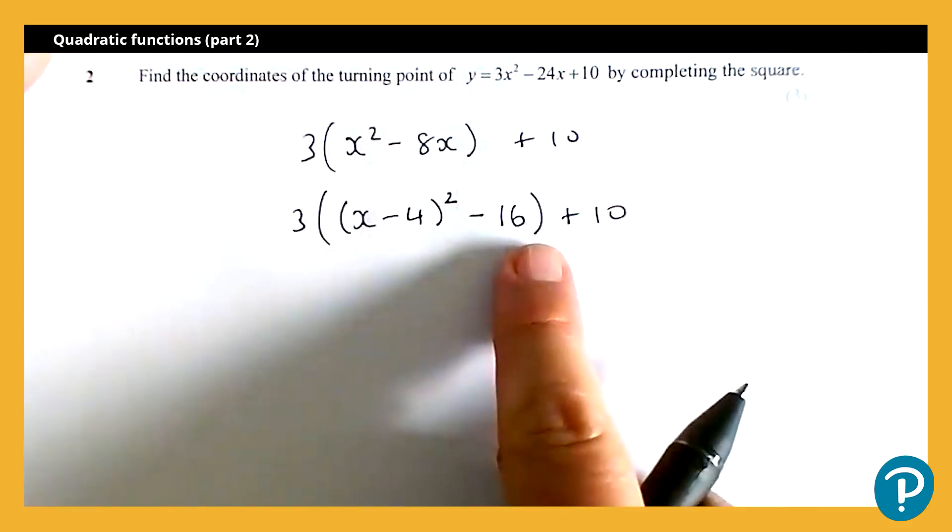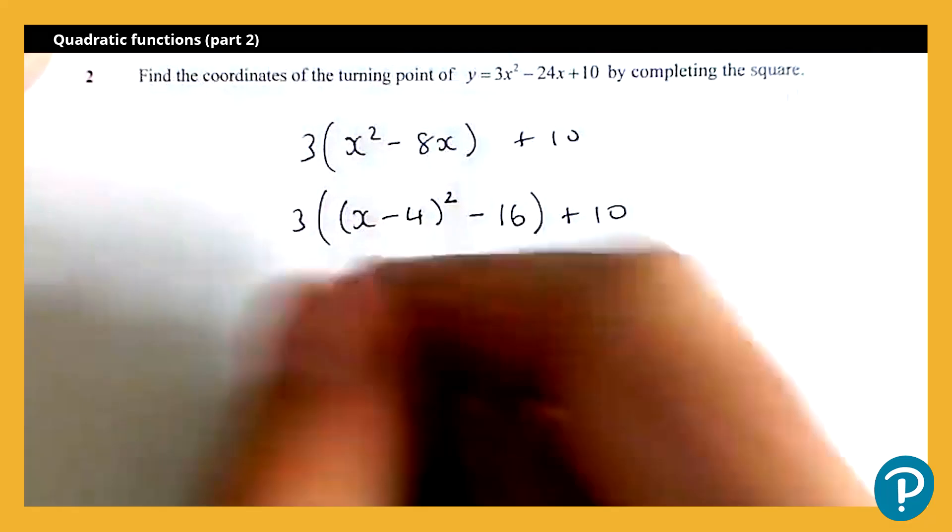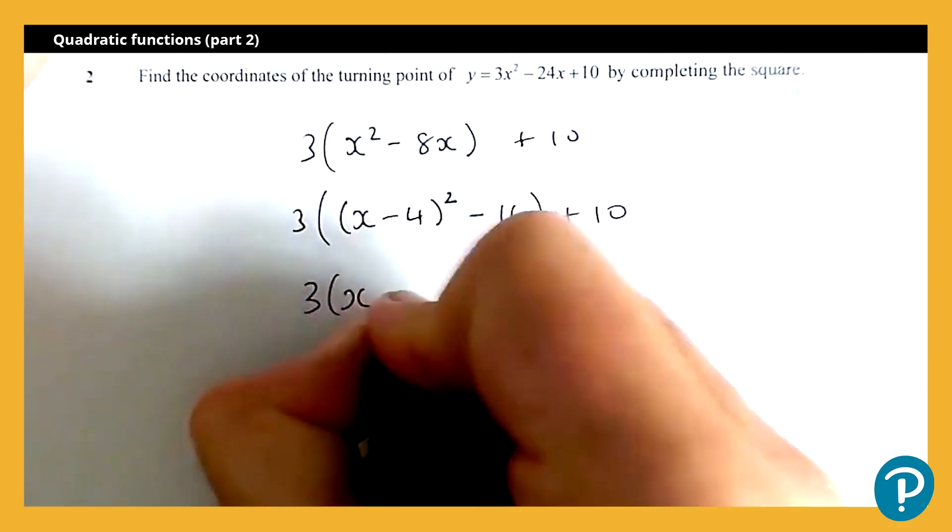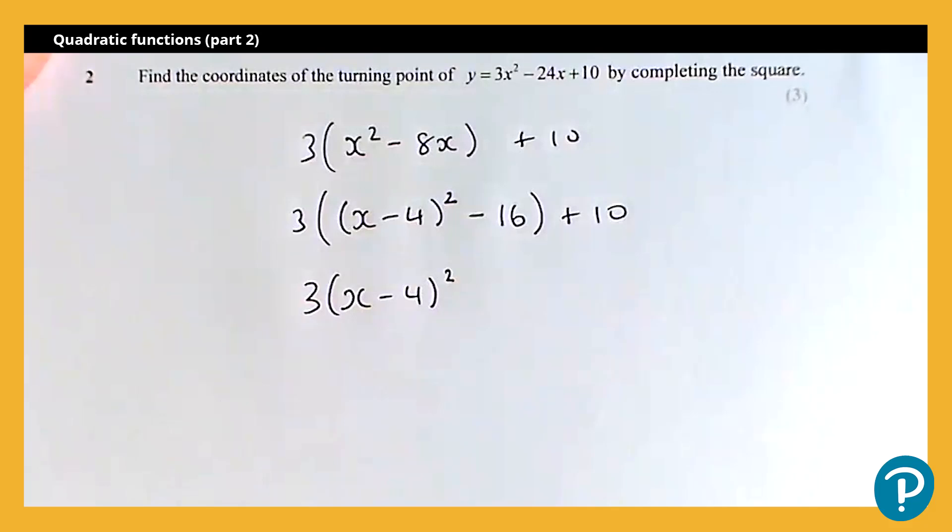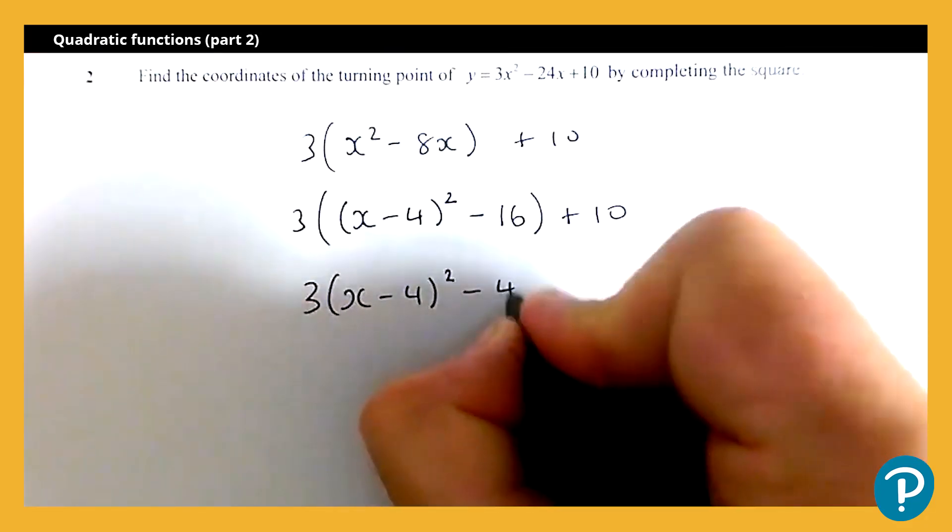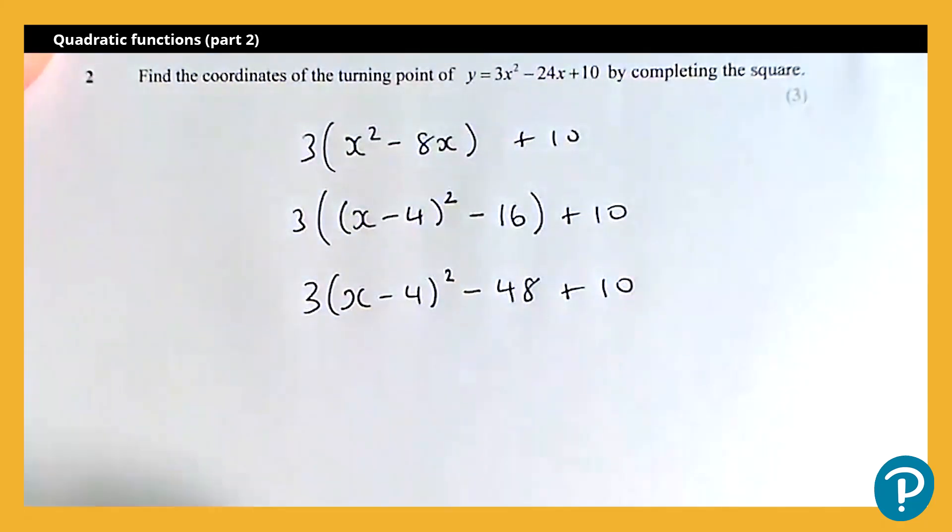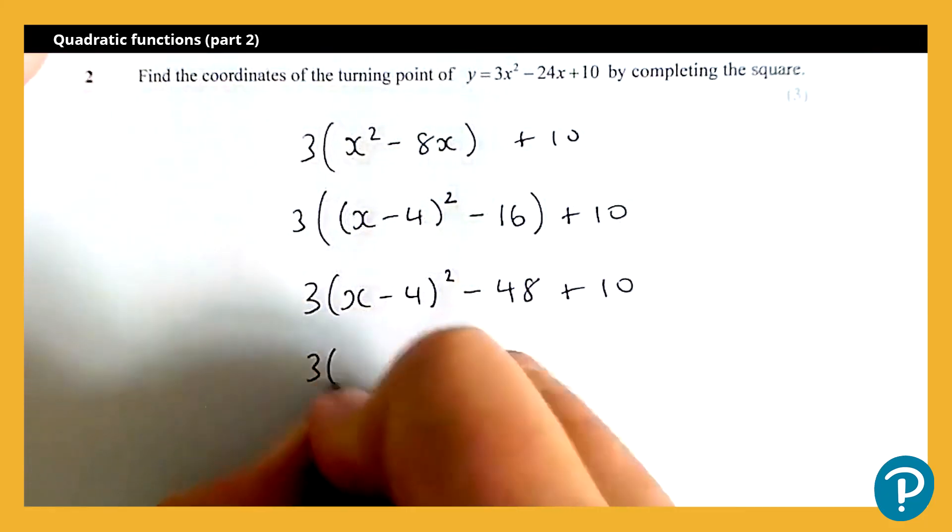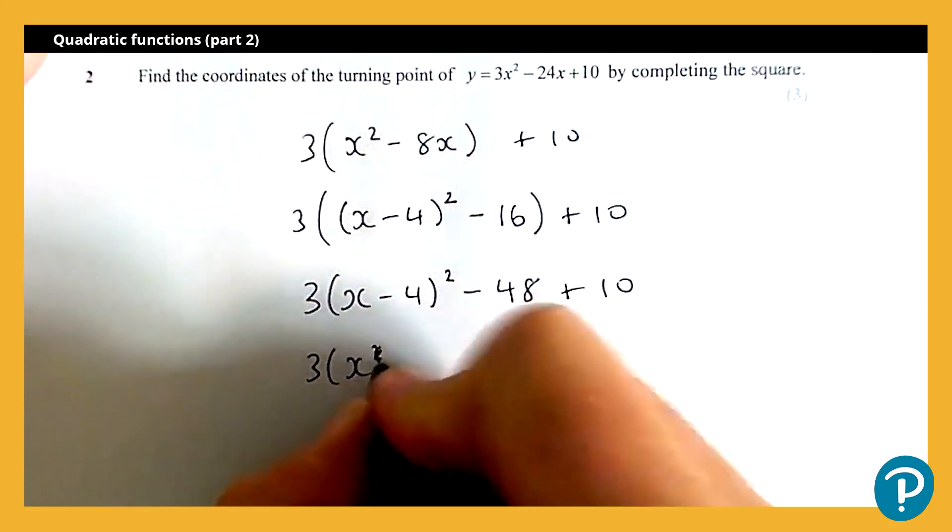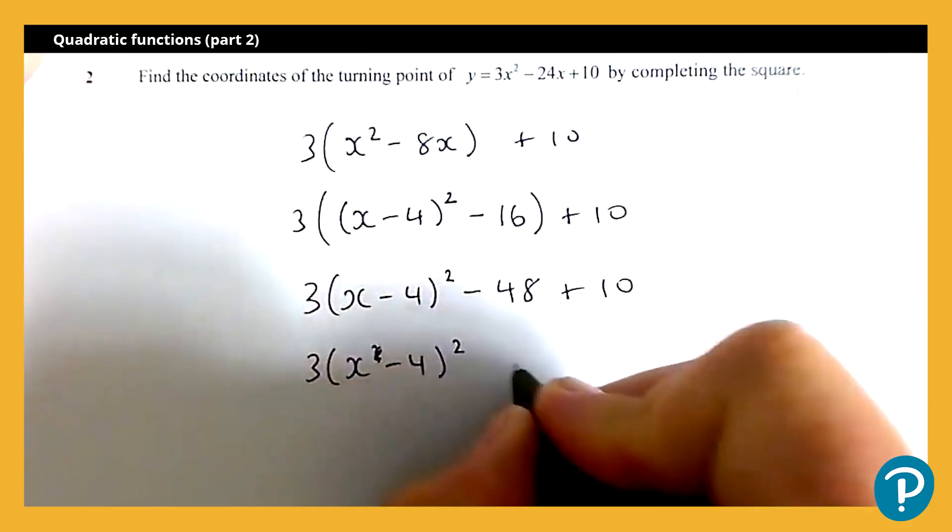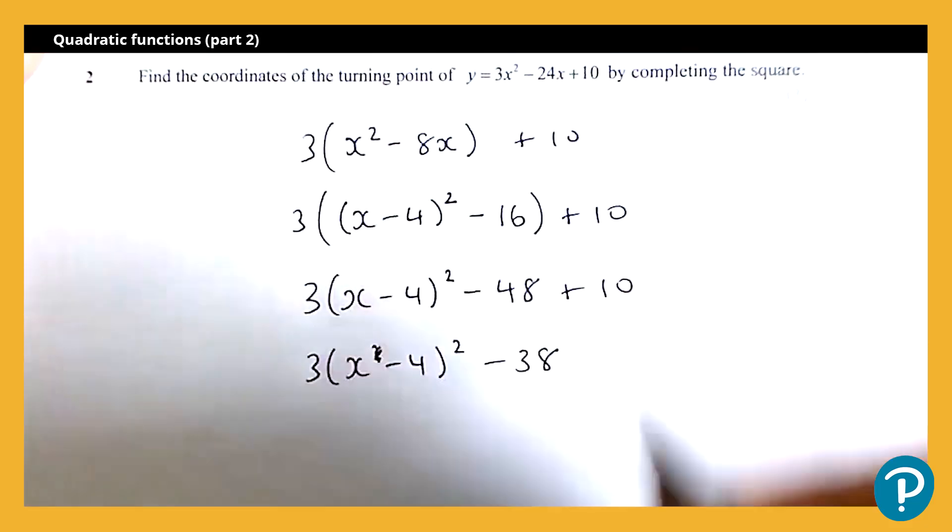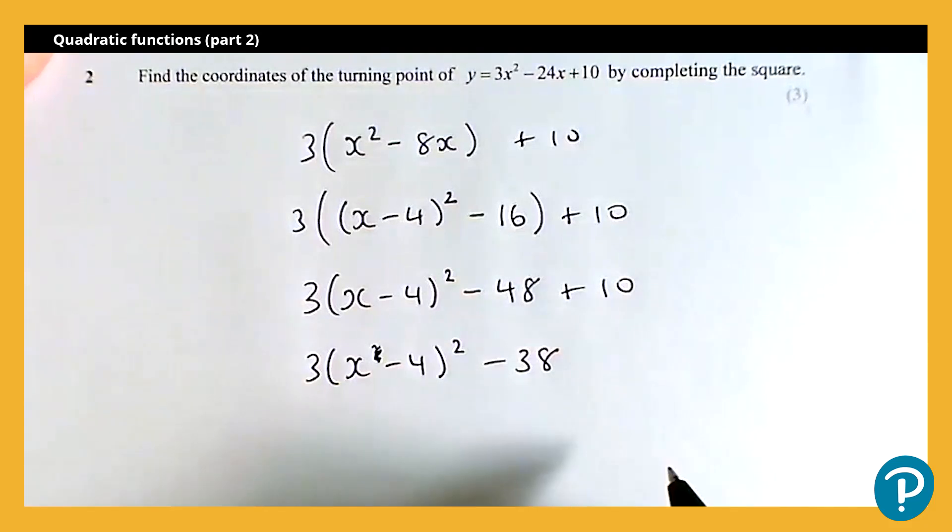Now final job, I need to expand the bracket with the three. So that will give me three times x subtract four squared, minus 48, and I've still got my plus 10. And then just final job of tidying up: three times x minus four all squared subtract 38. We've now got it in completed square form, so we can simply write down the coordinates of the turning point.